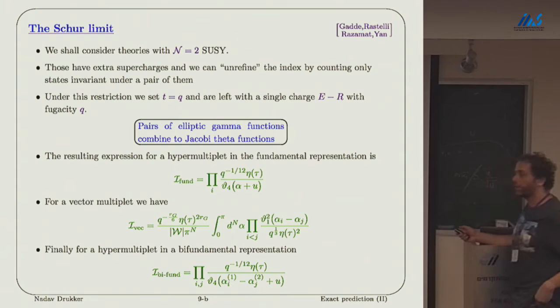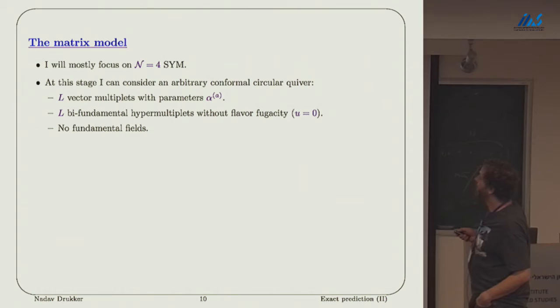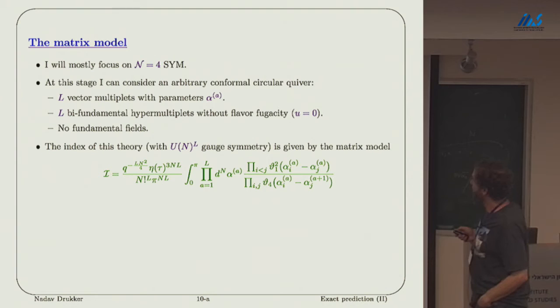This allows me to write down the matrix model for every Lagrangian theory. By the clever tricks of Leonardo and his friends, you can deduce from this expressions for the index for non-Lagrangian theories. For the matrix model, I'm going to mainly concentrate on N equals 4 super Yang-Mills. But let me start at the beginning with an arbitrary circular quiver. We have L vector multiplets and L bifundamentals connecting them.